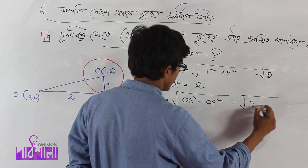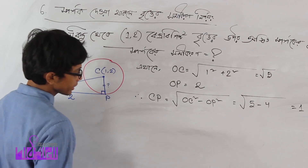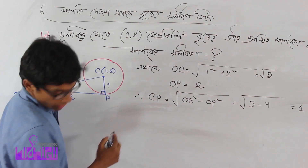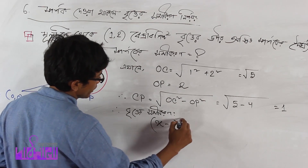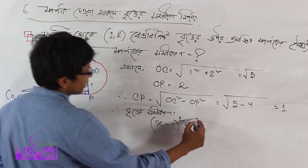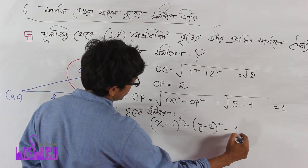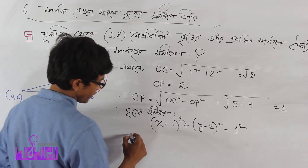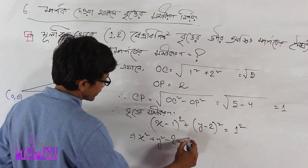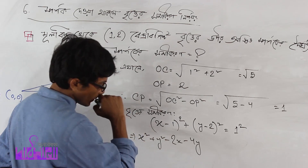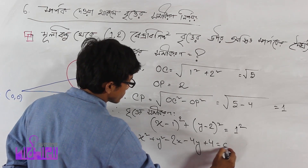1 whole square by h, whole square y minus 2 whole square equals to 22 square. x square plus y square minus 2x minus 4y plus 4 equals to 0.